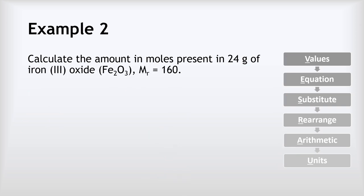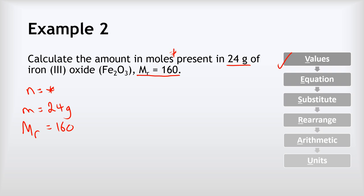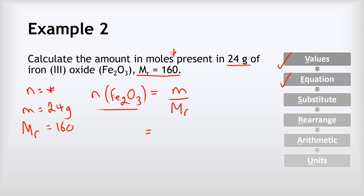Example two: calculate the amount in moles present in 24 grams of iron 3 oxide, where the MR is 160. Copying out the values: n is unknown; M is 24 grams; MR is 160. Writing the equation: n(Fe2O3) equals mass over MR. Substituting 24 divided by 160 gives 0.15 moles. That is our final answer.